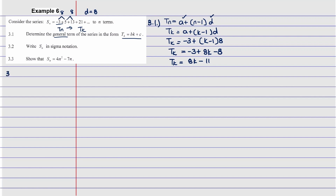For 3.2, write the series in sigma notation. Using the sigma symbol, the top value is N terms and the bottom is k equals 1 — we always start at k equals 1. Then we place the general term inside, giving us: sigma from k equals 1 to N of open bracket 8k minus 11. That's how you write the sigma notation.